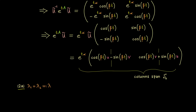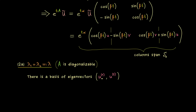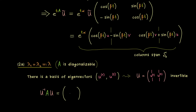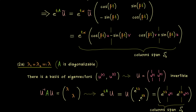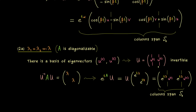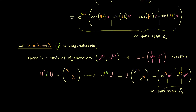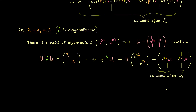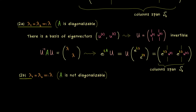Now we move to case 2A, which has only one eigenvalue but we still find enough eigenvectors to properly diagonalize A. This works essentially the same as case 1A: we find a basis of eigenvectors, put them into matrix U, and the only difference from case 1A is that both diagonal entries are the same eigenvalue lambda. Our matrix exponential also has only one eigenvalue, but the eigenvectors are still linearly independent, still spanning a two-dimensional solution space. So this case is already done.